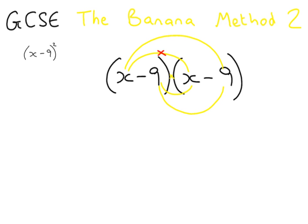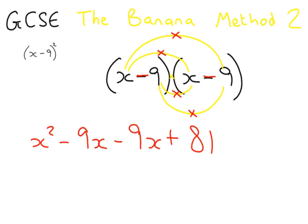x times x is x squared. x times minus 9, minus 9x. You might be able to do it all in one at this stage. x times minus 9, minus 9x. And finally, minus 9 times minus 9. 9 times 9 is 81. And as we discussed before, a minus and a minus multiplied together gives a plus.